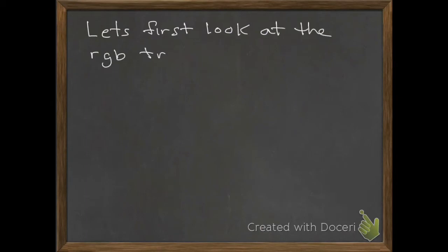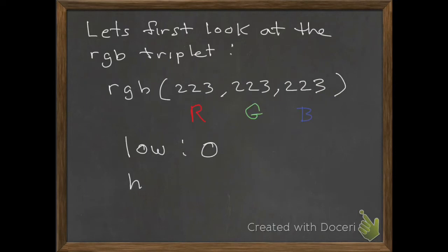Let's first look at the RGB triplet: RGB 223, 223, 223. The first number represents red, the second number represents green, and the third number represents blue. Now, the numbers can range in intensity from 0 to 255. 255 is actually 2 raised to 8 minus 1.